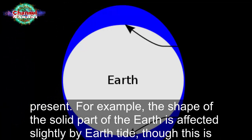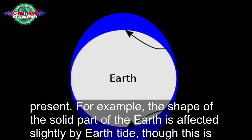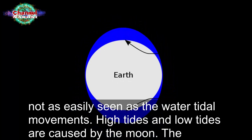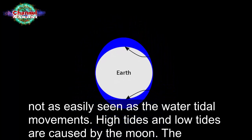For example, the shape of the solid part of the earth is affected slightly by earth tide, though this is not as easily seen as the water tidal movements.